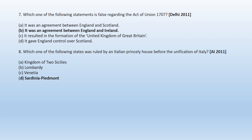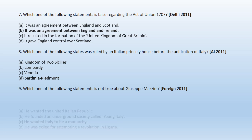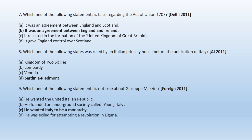Question 9: Which one of the following statements is not true about Giuseppe Mazzini? A. He wanted the United Italian Republic, B. He founded an underground society called Young Italy, C. He wanted Italy to be a monarchy, D. He was exiled for attempting a revolution in Liguria. Option C is the right answer — Giuseppe Mazzini never wanted Italy to be a monarchy.